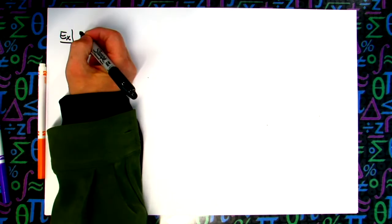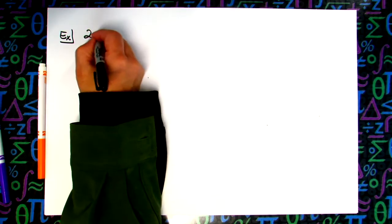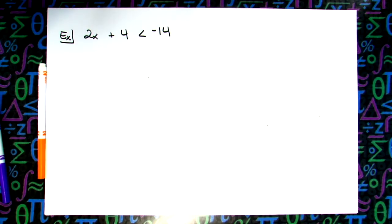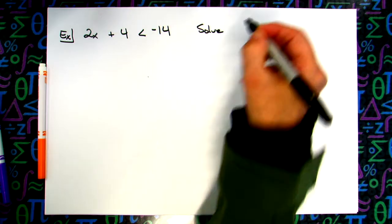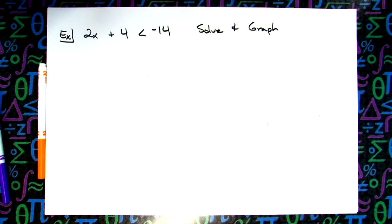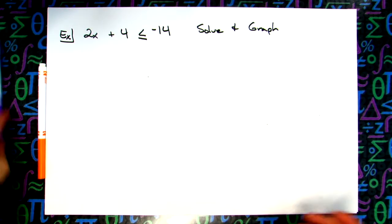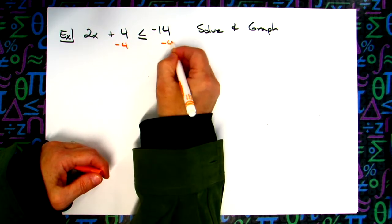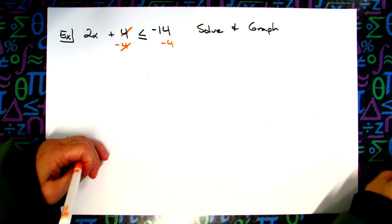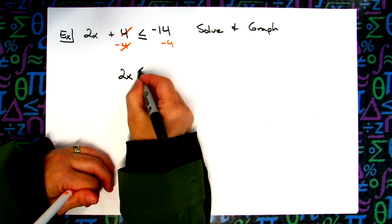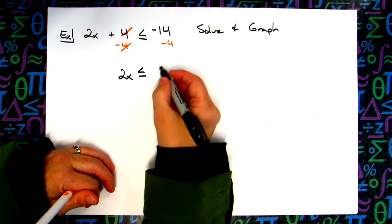We're going to look at 2x plus 4 is less than or equal to negative 14. Again, it'll probably tell you to solve and graph. We'll do both number lines with open dot, closed dot, curvy and square, and also the interval notation. It's a two-step equation — we subtract 4 from both sides, so the 4s go away. It's just like a two-step equation except with the inequality symbol, so 2x comes down with less than or equal to. Negative 14 minus 4 gives negative 18.